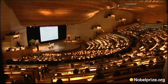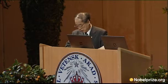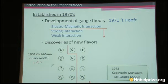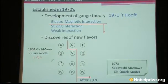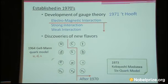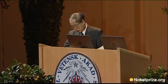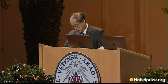Another important progress made in the 1970s was the discovery of the new flavors. Among the six quarks and the six leptons, those particles on the right-hand side were found after 1970. In particular, the tau, c, and b were found in the 1970s. The quark model was proposed by Gell-Mann in 1964; at that time, the quarks were U, D, and S. A paper was published in 1973 in which we proposed a six-quark model to explain CP violation. At that time, only three quarks were widely accepted, and no one thought of six quarks.